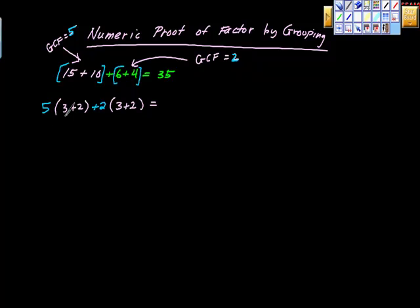If we try that, we'd have 3 plus 2 is 5. 5 times 5 is 25. 2 times 5 is 10. 25 still works, doesn't it?